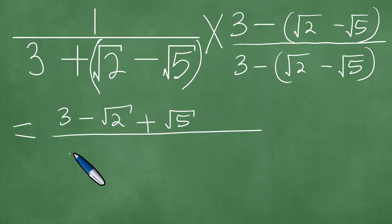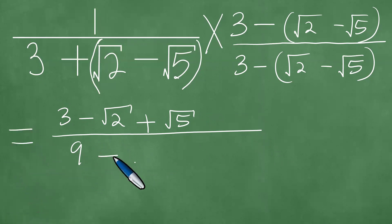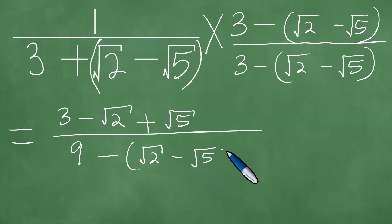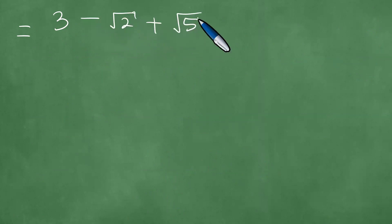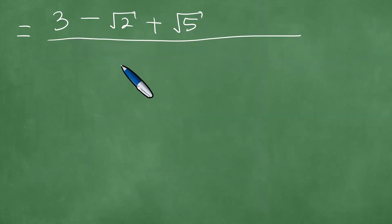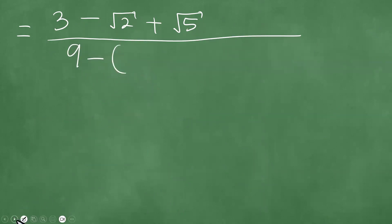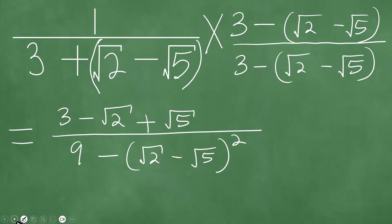So you divide by 3 — 3 is 9 minus. So you have 9 minus there. What this yields is the square root of 2 minus the square root of 5, and you square, like so. Therefore in the numerator, you have 3 minus the square root of 2 plus the square root of 5, and you divide everything by 9 minus the square root of 2 minus the square root of 5 all squared.